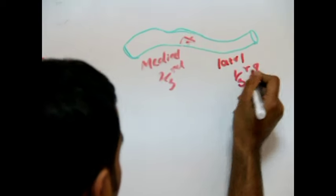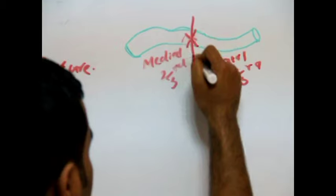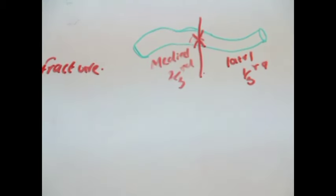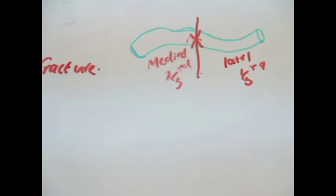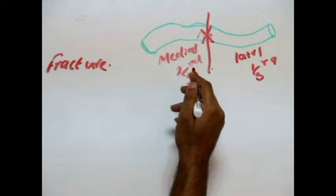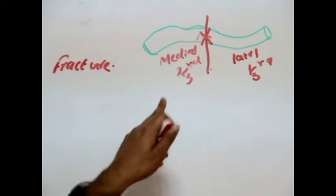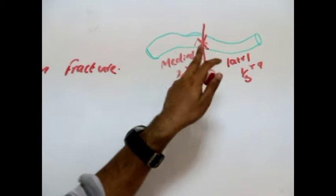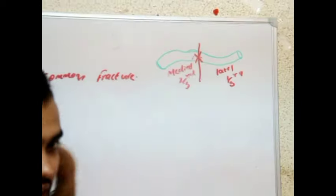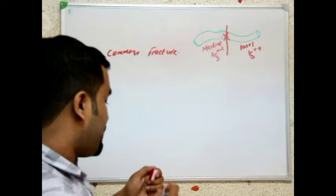The common fracture takes place at the medial two-thirds and lateral one-third junction — this point is very important. The fracture occurs mainly here, at the medial two-thirds of the clavicle. This is the structure of the clavicle.